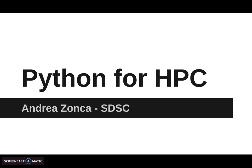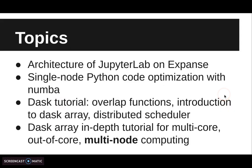Let's first review the topics we're going to cover today. We will quickly go through the architecture of executing JupyterLab on Expanse on a computing node. Then we need to start thinking about optimizing our Python code for high performance computing. The first step is always to optimize single node performance before introducing the complexity of distributed computing, making the most out of the resources of each node.